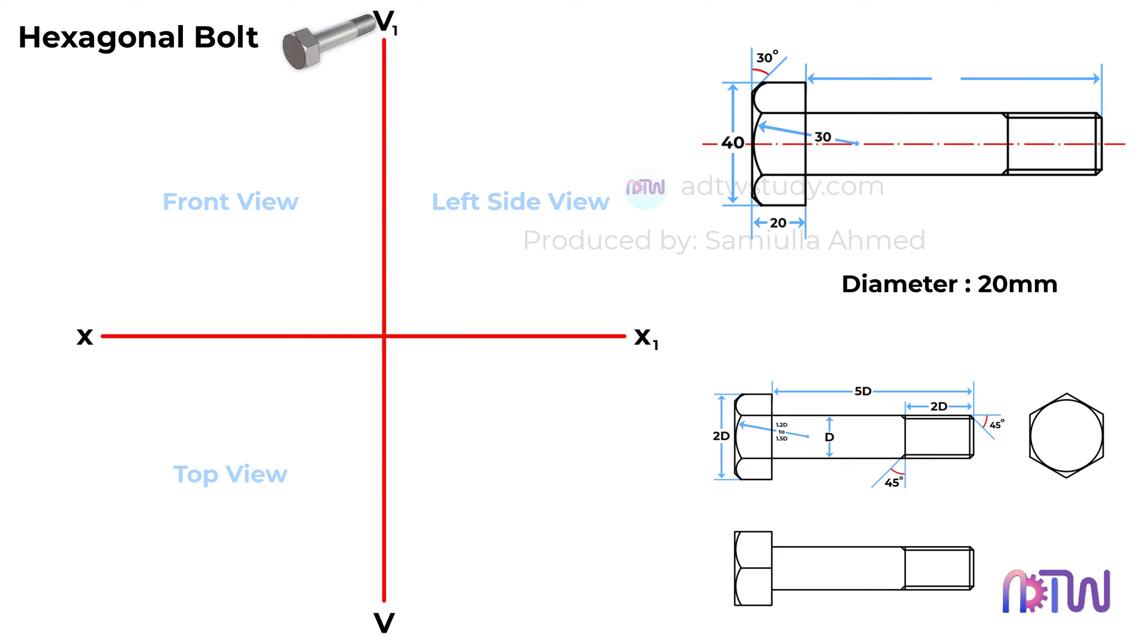The body length of a hexagonal bolt is generally 5 times the diameter, totaling 100mm, while the threaded length is approximately twice the diameter, or 40mm. The minor diameter of the bolt typically ranges from 0.8 times the diameter to 0.85 times the diameter. We'll opt for 0.8 times the diameter. The thread's runout is indicated by a 45-degree chamfer, and the end chamfer maintains a 45-degree angle as well.